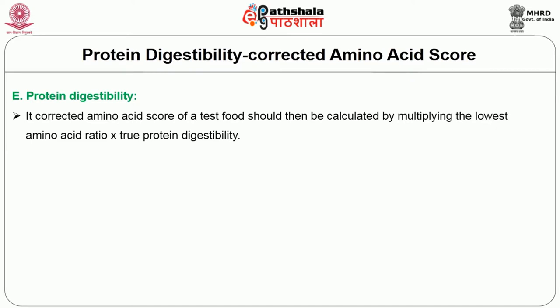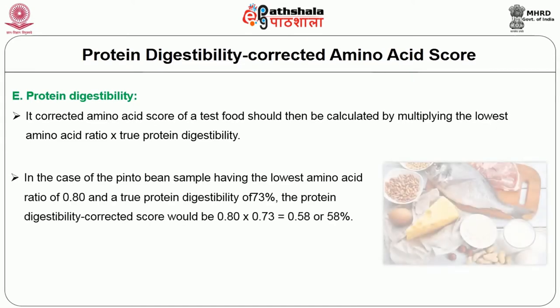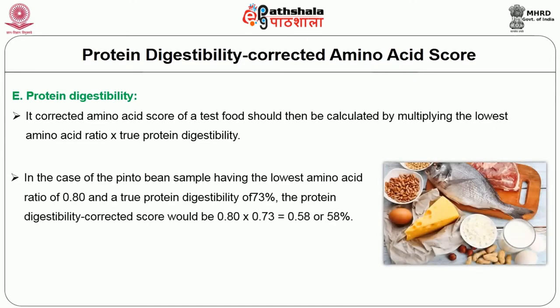So you get the PDCAAS value. In the case of the pinto bean sample having the lowest amino acid ratio of 0.8 and a true protein digestibility of 73 percent, the Protein Digestibility Corrected Amino Acid Score would be 0.8 × 0.73 = 0.58, or 58 percent.